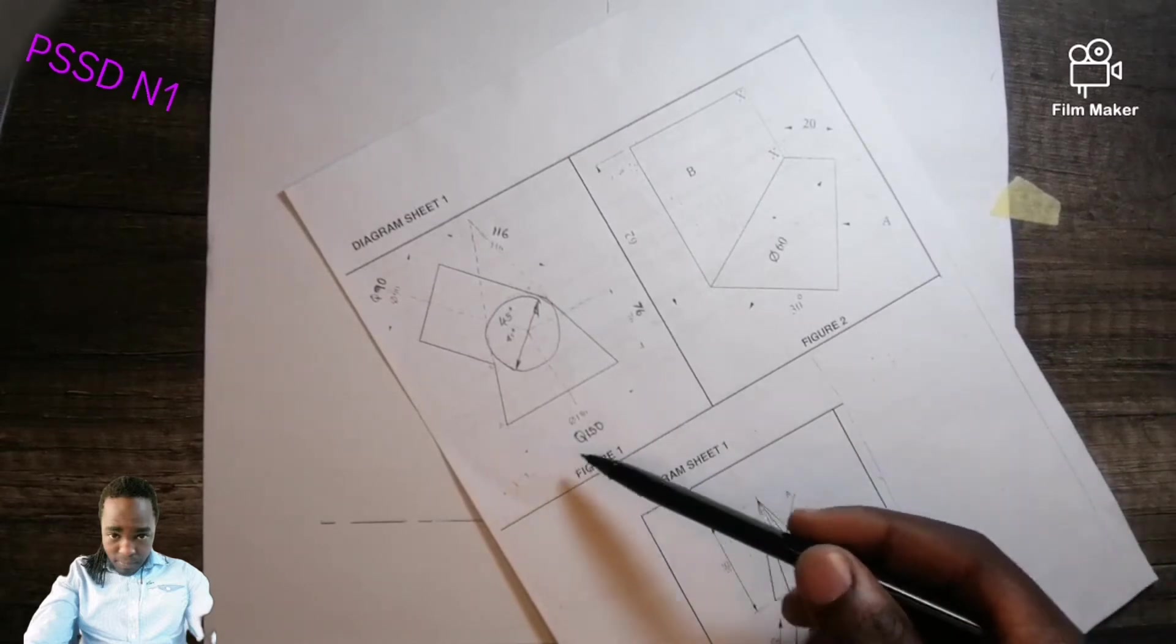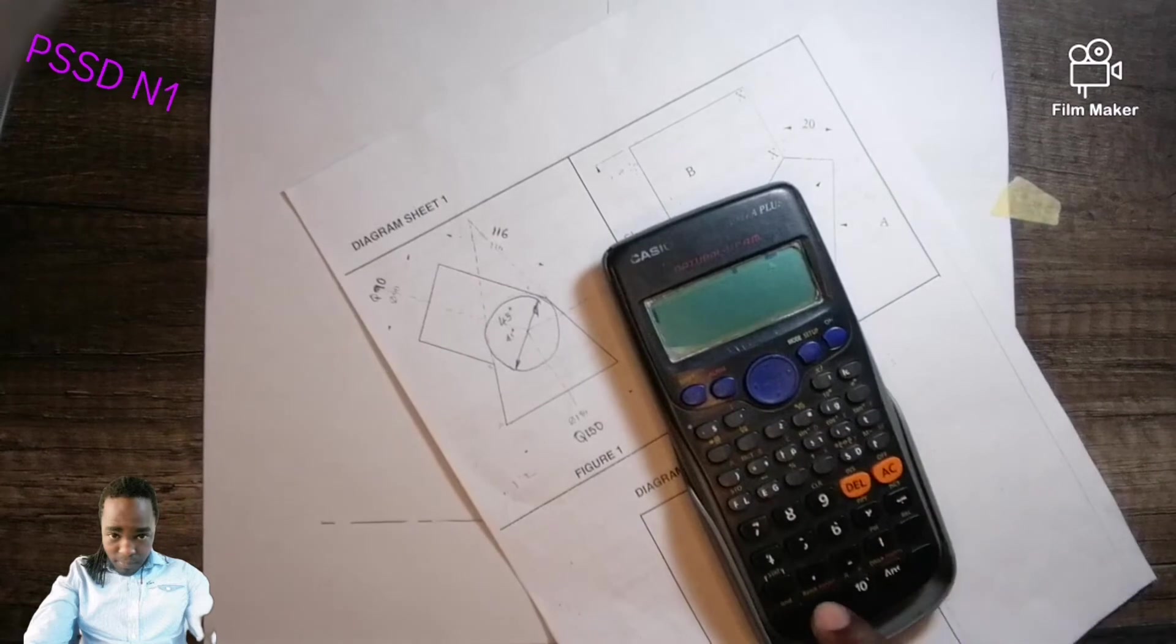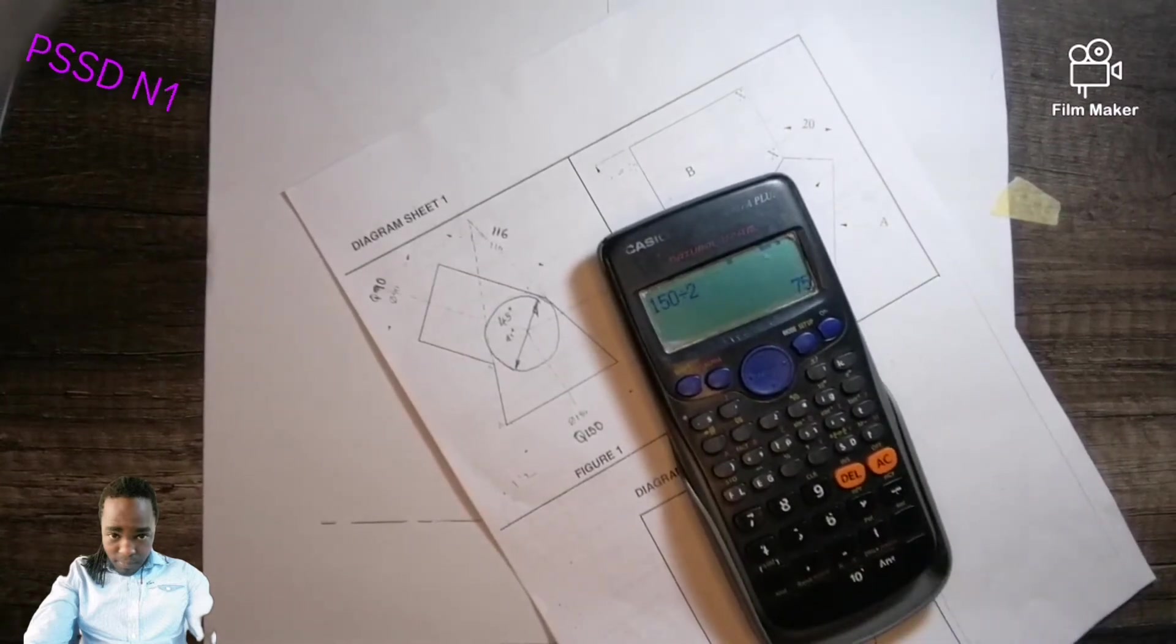You're going to say 150 divided by 2. Why divide by 2? Because they said use a reduction scale of 2. So 150 divided by 2 we are getting 75.